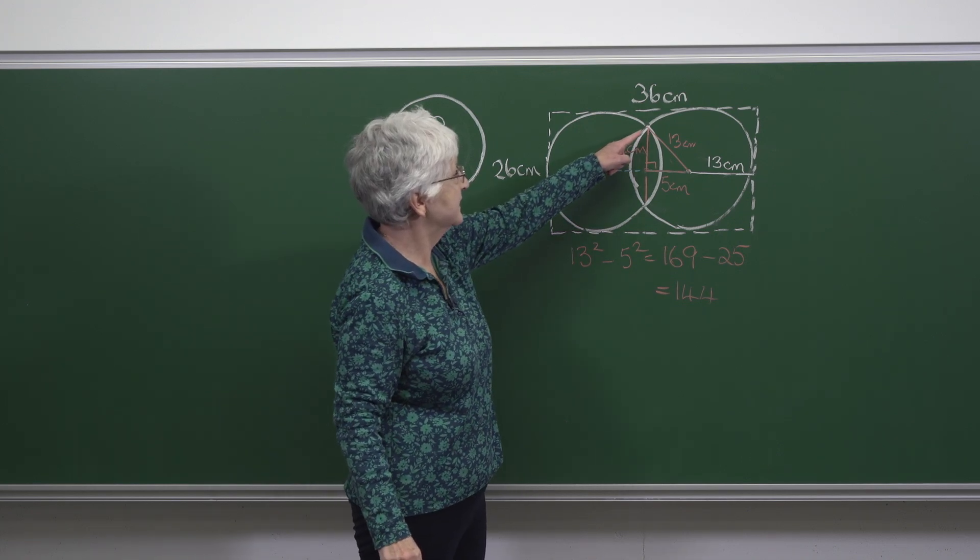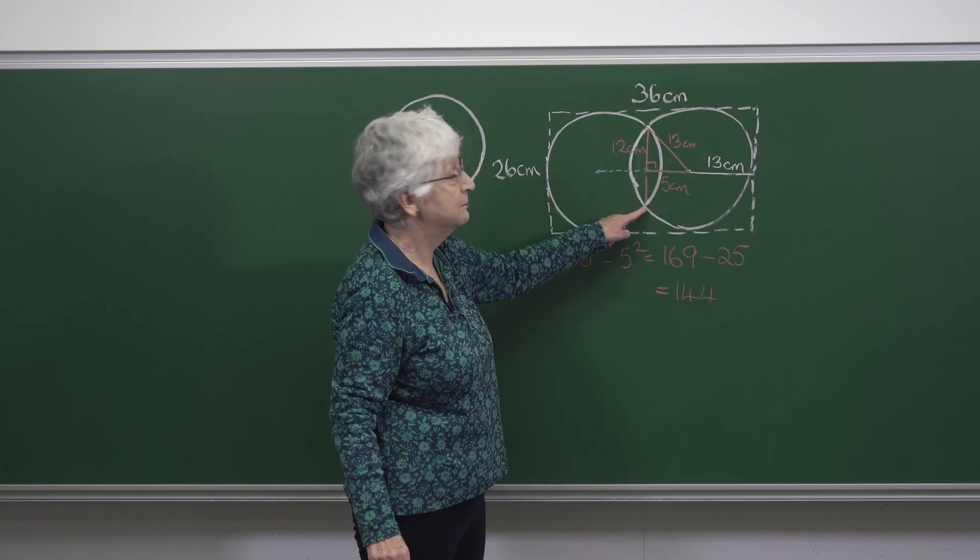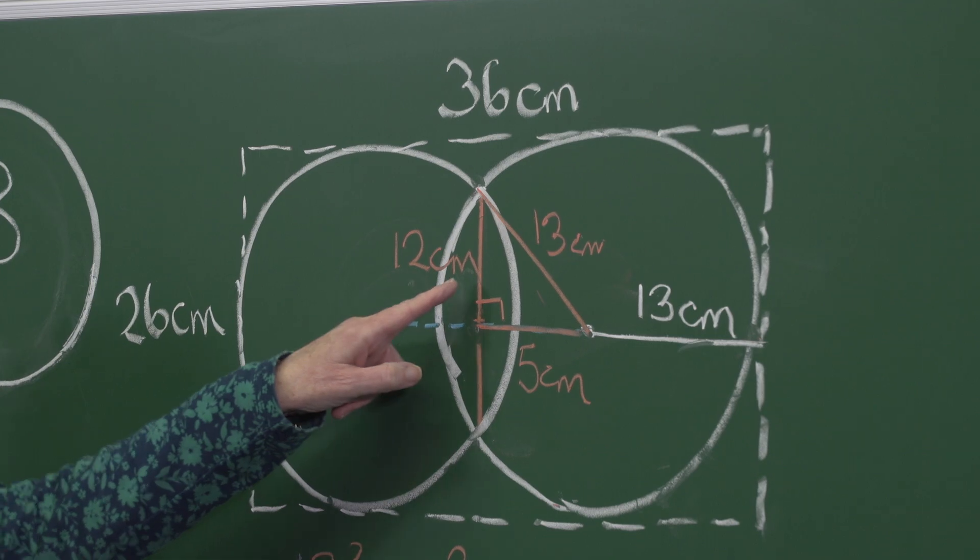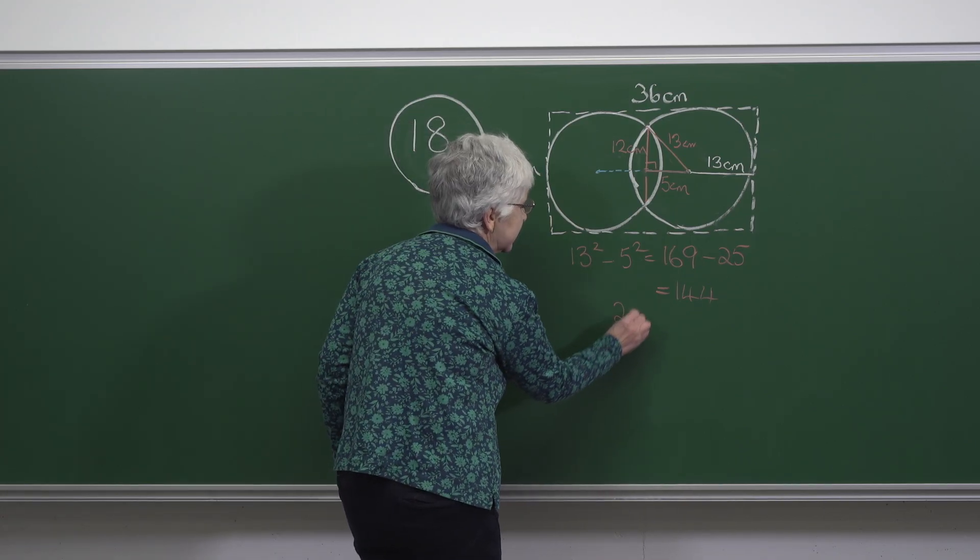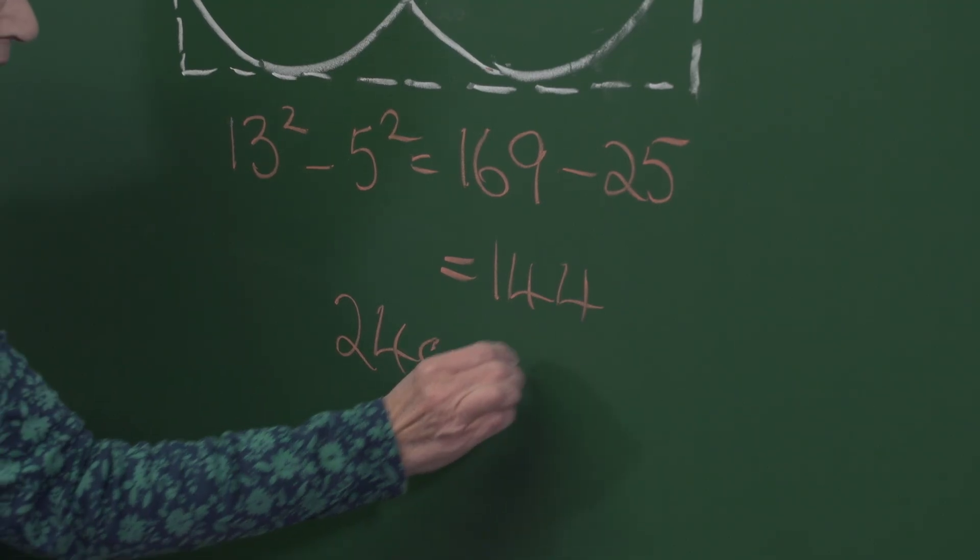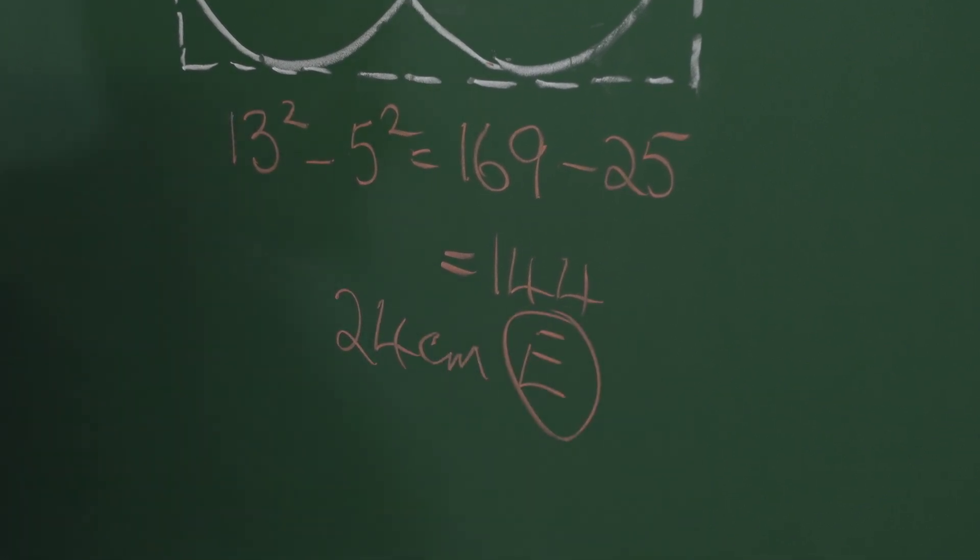And the required distance from here to here by symmetry is 2 times 12 centimeters, which is 24 centimeters. And the answer is E.